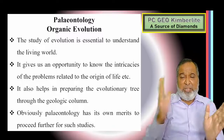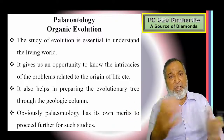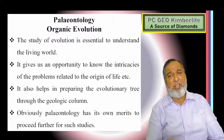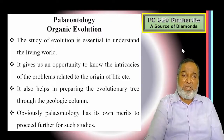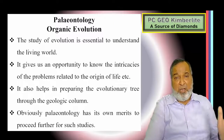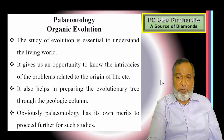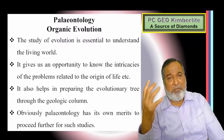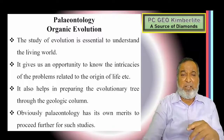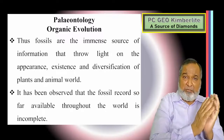We have various evolutionary theories which have been proposed, and we are going to see various examples — whether elephant, horse, camel, dinosaurs, brachiopods, cephalopods or corals — how they have been evolved. We will see the evolutionary tree, how particular animals or plants have been evolved from time to time, why they have been evolved, and what are the reasons. This particular branch is very important for paleontology, that is organic evolution, and there are merits and demerits to study.